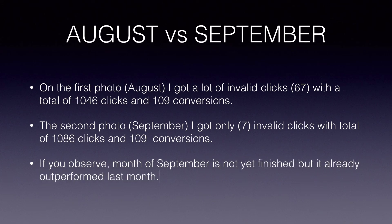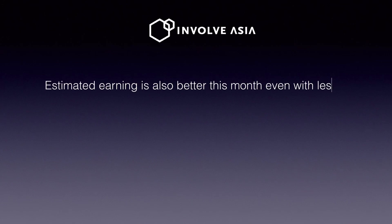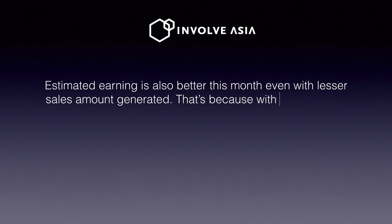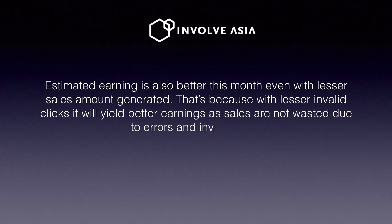As you can see, the month of September is not yet finished but I already outperformed last month. Estimated earnings are also better this month even with a lesser sales amount generated. That is because with fewer invalid clicks, it will yield better earnings as sales are not wasted due to errors and invalid links.